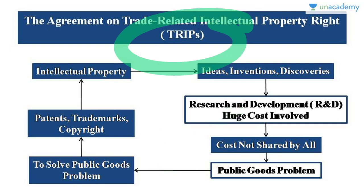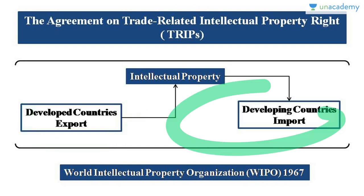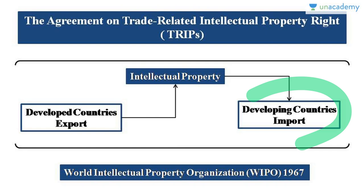There is a public good problem with intellectual property that needs to be solved. To restrict the use of intellectual property to those who pay for it, countries have come up with arrangements like patents, trademarks, and copyrights. These are easy to implement within a country's boundary, but when intellectual property starts getting shared between countries it becomes difficult to regulate patents, trademarks, and copyrights across borders — which is why we needed an agreement called TRIPS.